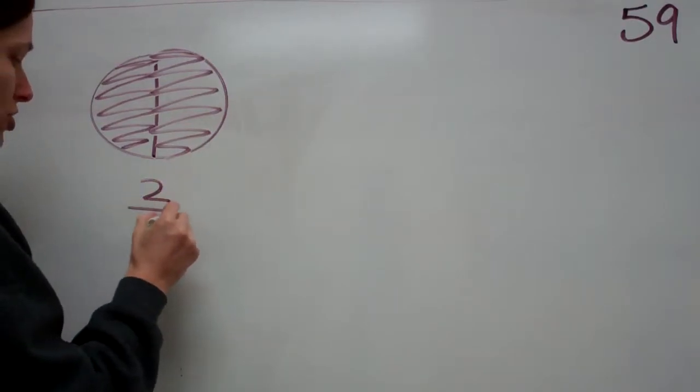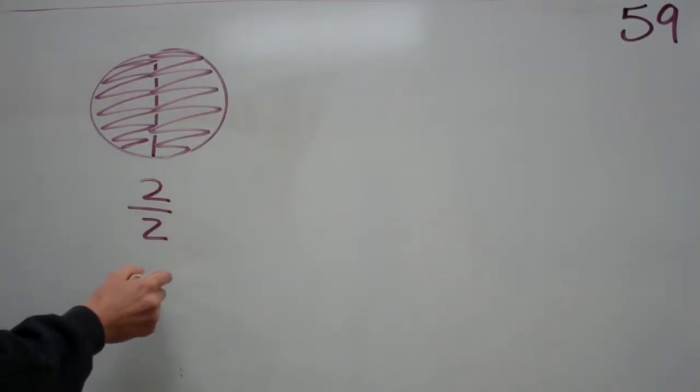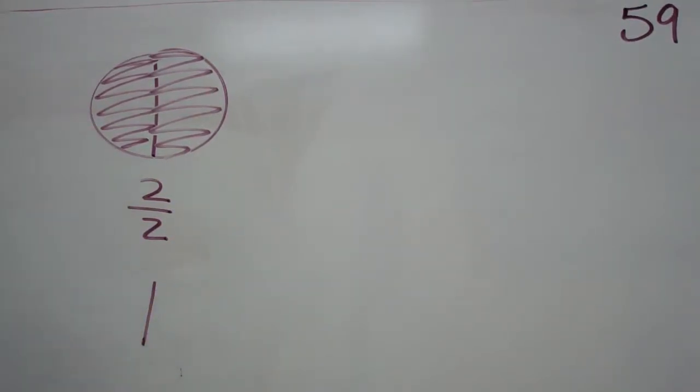A whole, okay, and so two out of two equals a whole, right? Two slices out of the two slices were in there. So any number that is like the same digits will be a whole, makes one whole. You're exactly right.